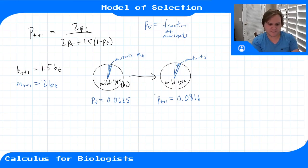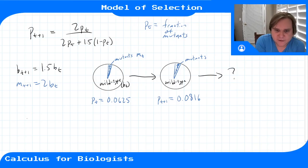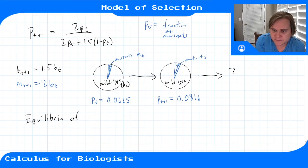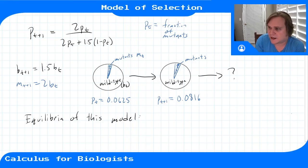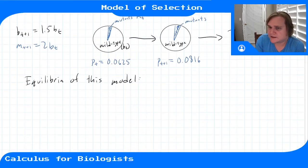But what's going to keep happening after we keep iterating this model forward in time? So let's look for the equilibria of this model. Then maybe if we figure out which one's stable and which one's unstable, we can predict what's going to happen.